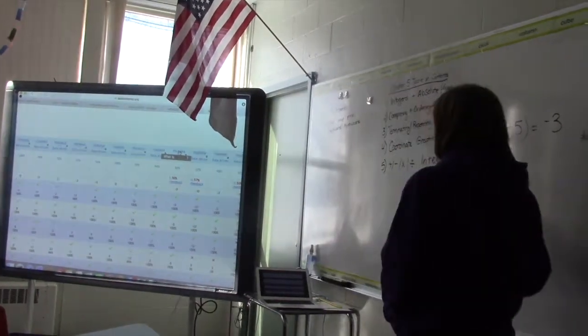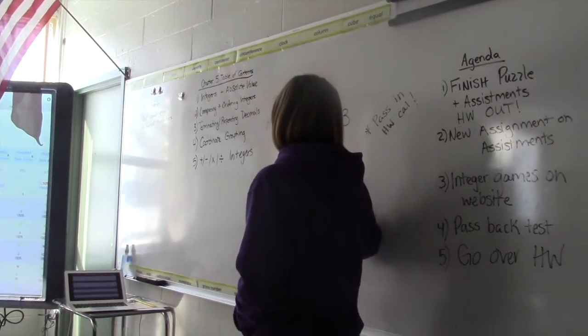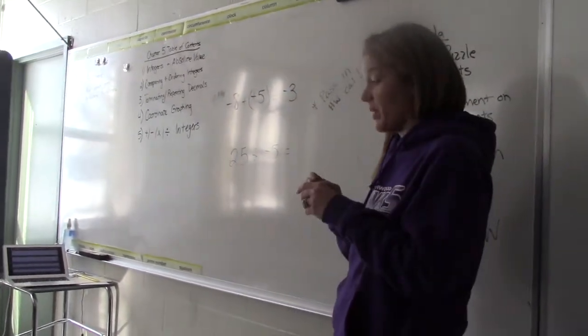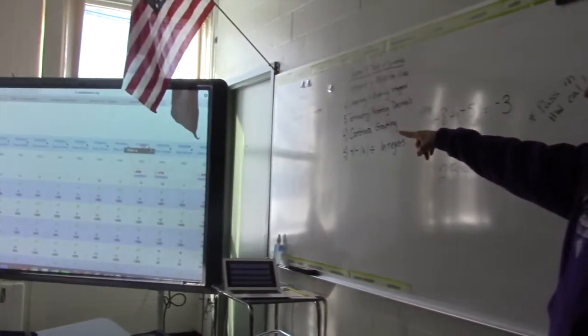Division problem: 25 divided by negative 5. The most common wrong answer was 5 for this question.